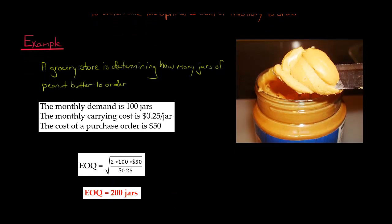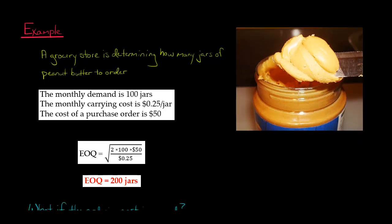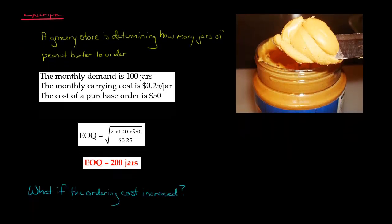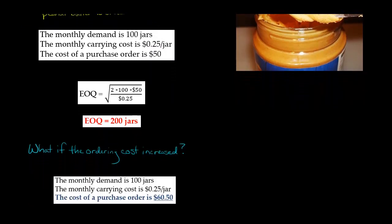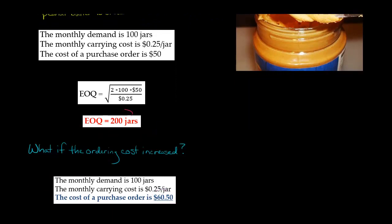So the result is 200 jars. Now let me change things up a bit to show how we're balancing the ordering and carrying costs off one another. What if the cost of ordering increased? Right now it's $50 a purchase order, but what if it was higher — what if it was $60.50? How would our economic order quantity change?